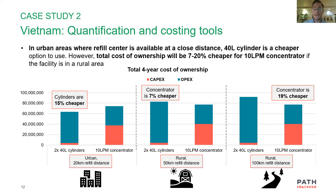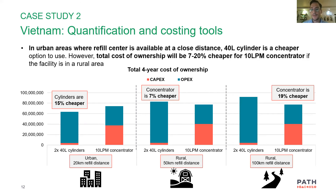A lot of concentrators have a flow rate limited to 10 liters per minute, whereas a patient might need more oxygen than that — so there are clinical considerations the Ministry of Health also has to tackle beyond just cost. But this analysis at least helps answer the cost question and gives different provinces the data to plan where they want to put their resources, especially for health centers very far away.